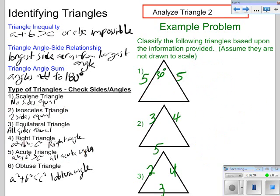Alright, now the next triangle we have, if you notice we have three sides, three, four, and five. So we know it's going to be scalene, no sides are equal.